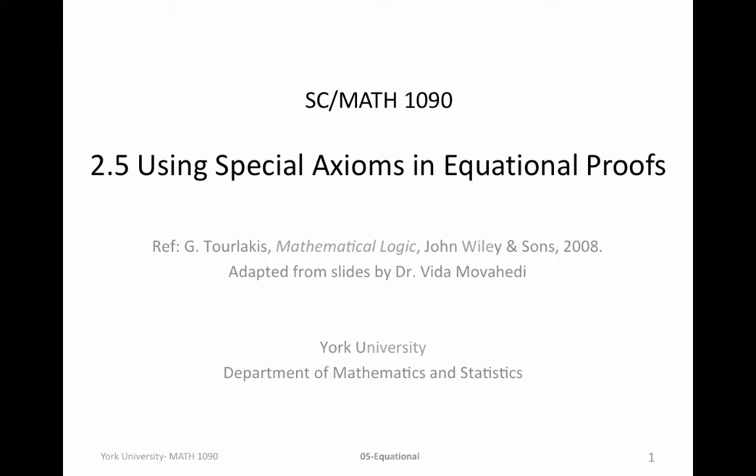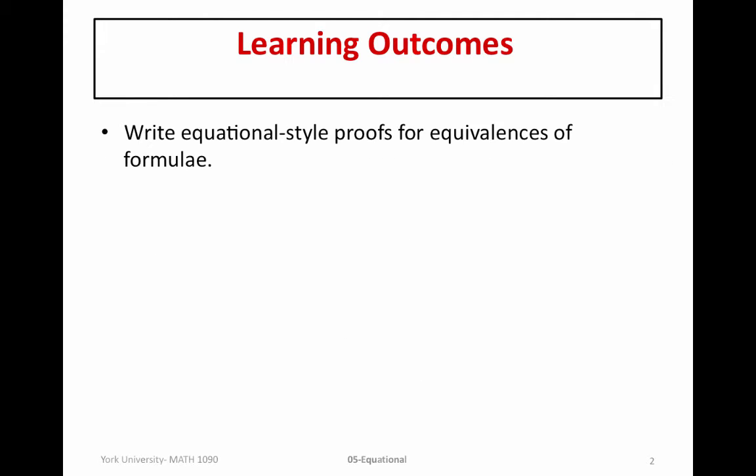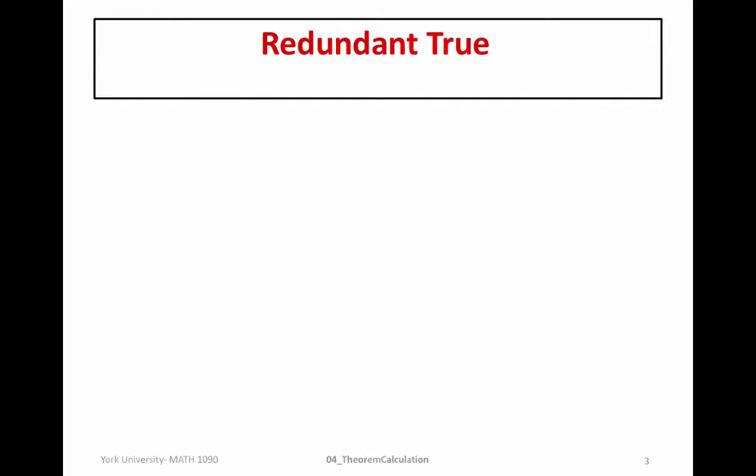In this video we're going to look at section 2.5, using special axioms in equational proofs. The learning outcomes for this section are a continuation from the previous sections of chapter 2, which are simply to continue writing equational style proofs for equivalences of formulae. We'll continue to develop new absolute theorems and relative theorems to add to our toolbox to help us discover more mathematical truths.